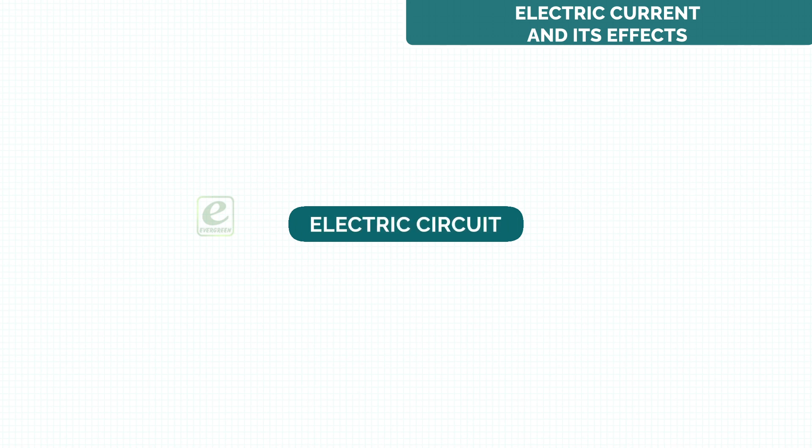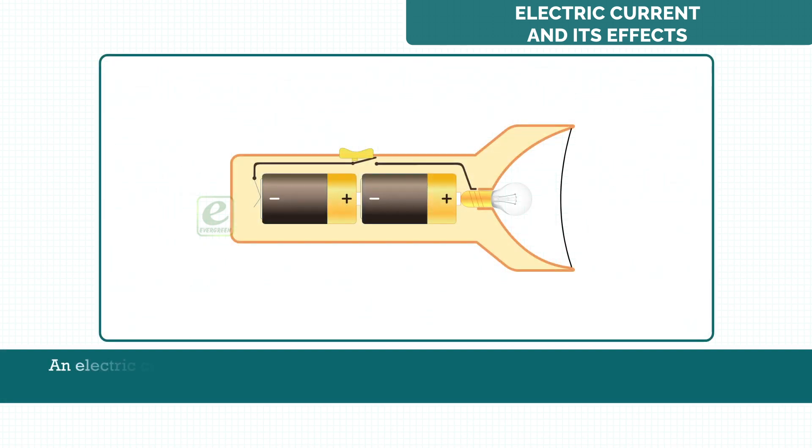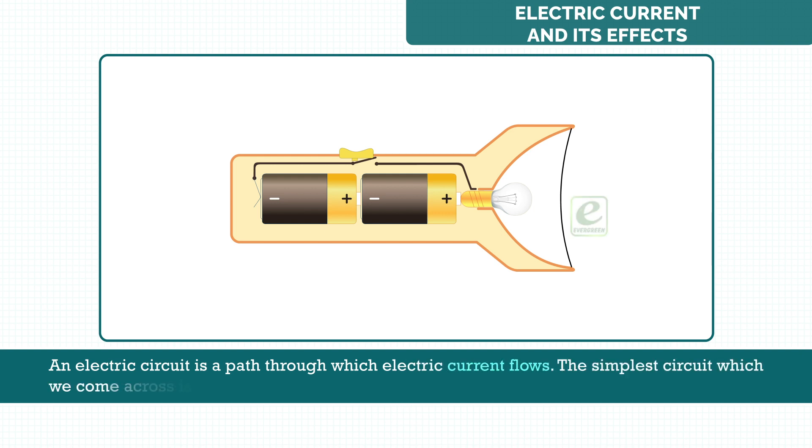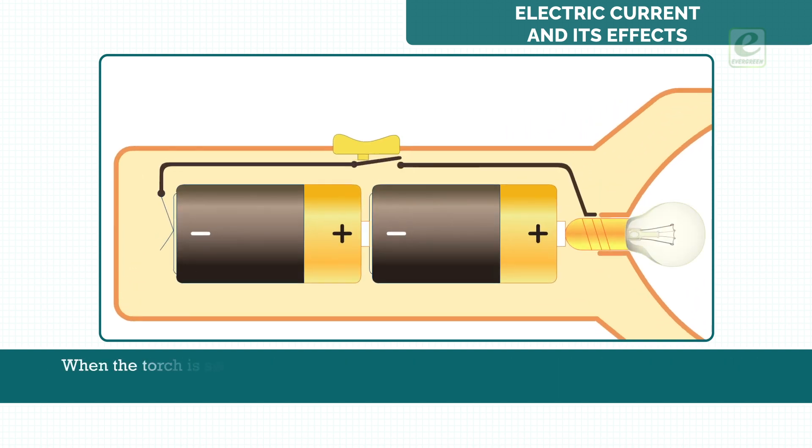Electric circuit. An electric circuit is a path through which electric current flows. The simplest circuit which we come across is the circuit consisting of a battery, two cells and a bulb in a torch. When the torch is switched on, electric current flows through the bulb.